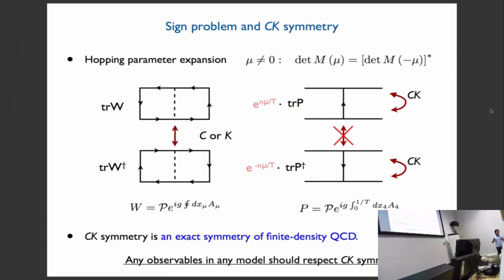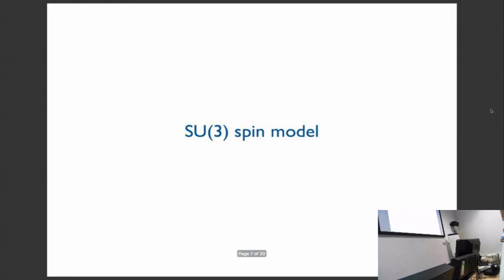However, since the gauge field transforms non-trivially under CK, if you look at this relationship, it comes from CK, because C changes mu to minus mu, and K gives the whole thing a complex conjugate. So whatever models you work on, any QCD should respect CK symmetry. Now I want to show how the CK and sign problem play a role here in spin model.